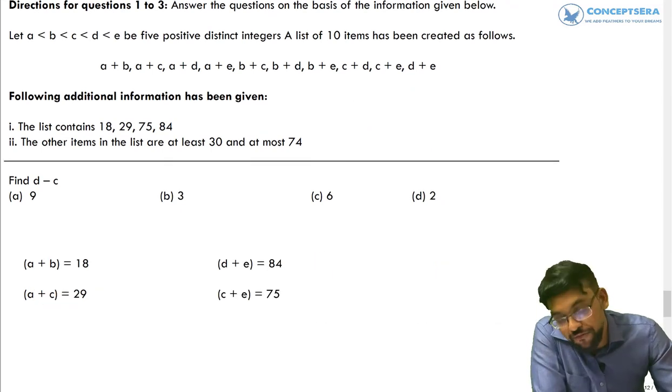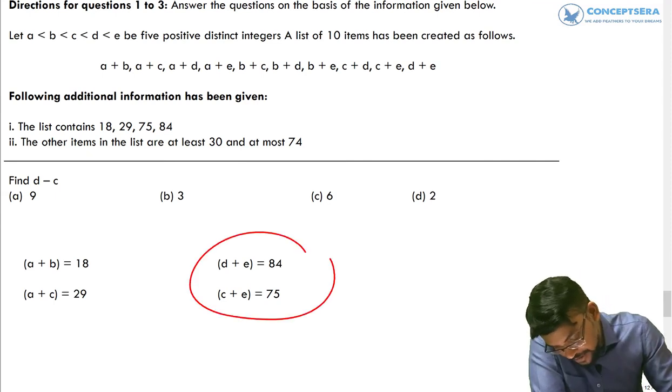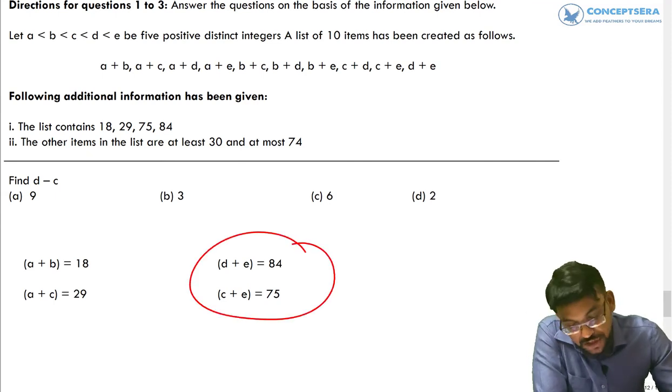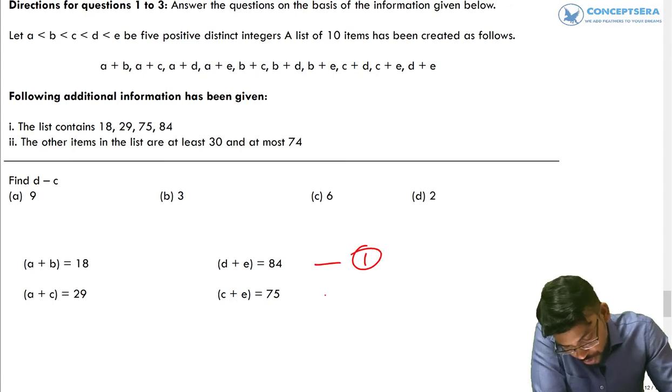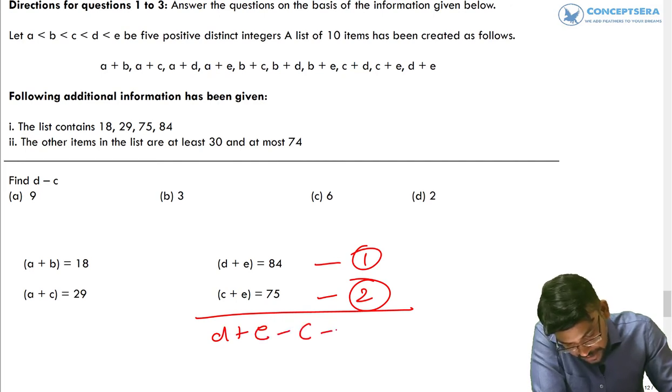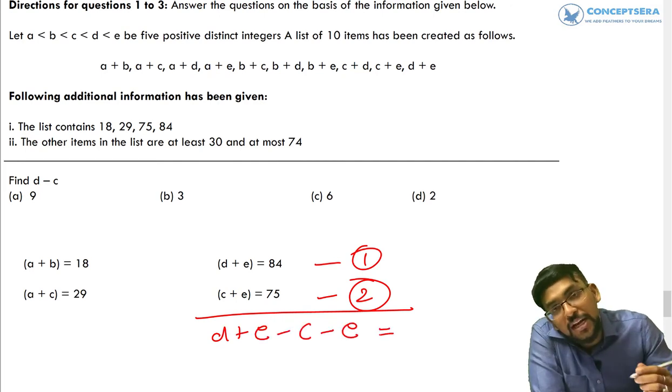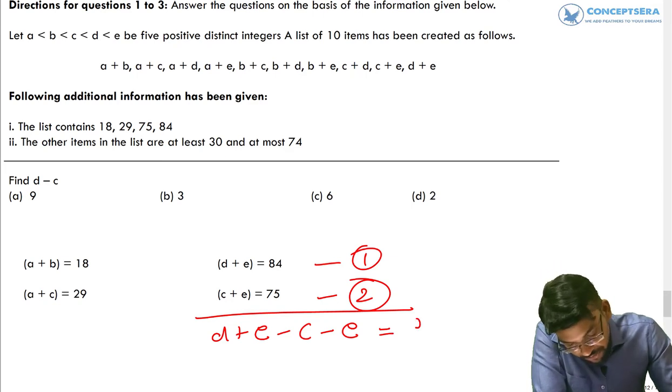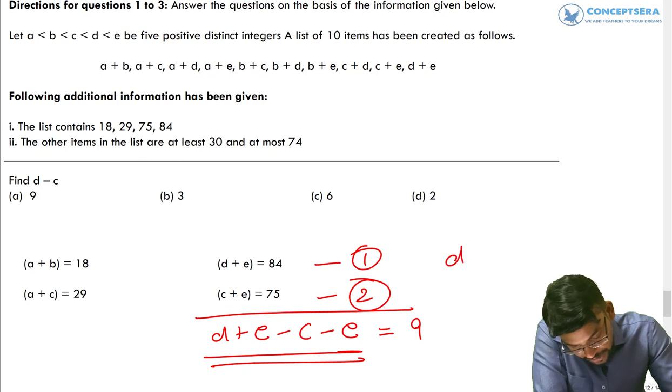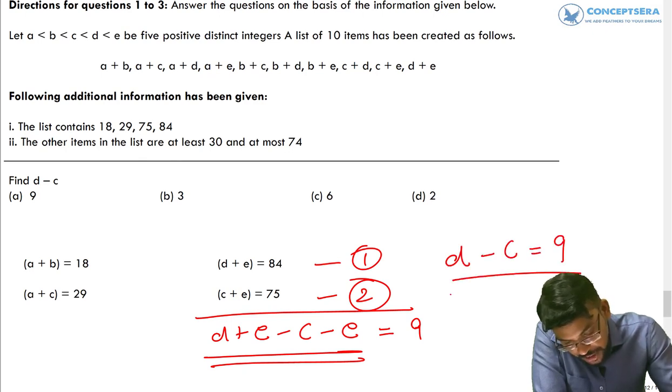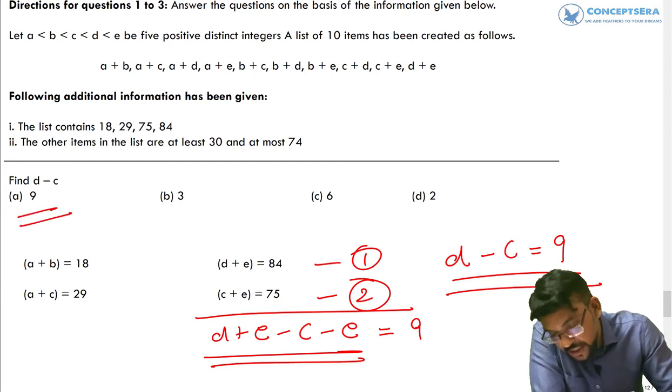So if you see the first question, the first question is D minus C. So you are looking for D minus C, you have to look at these two equations. If we subtract equation 2 from equation 1, we can get from here D plus E minus C minus E is equal to 84 minus 75, which is equal to 9 here. And this comes out to be D minus C. And so D minus C is equal to 9. So right answer for this question is A.